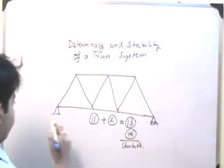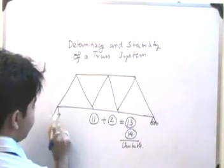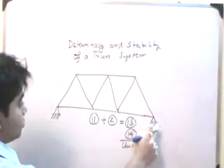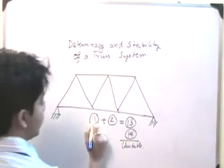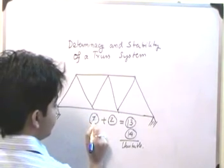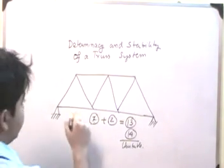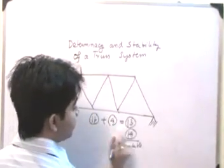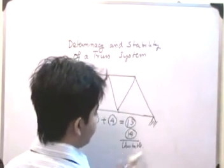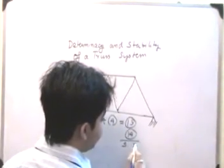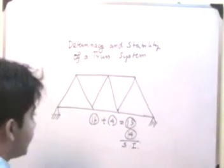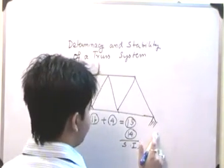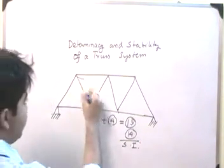Now let's look at a stable but indeterminate structure. If both supports are hinge connections, we get 2 + 2 = 4 restraints. With eleven internal unknown members, the total is 15 unknowns against only 14 equations of equilibrium. This is a statically indeterminate structure, and the indeterminacy is external because it arises from the external support reactions.